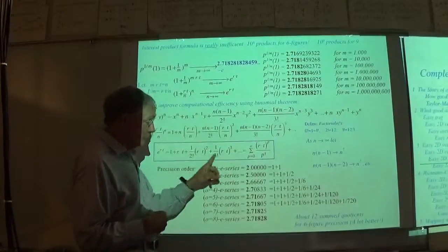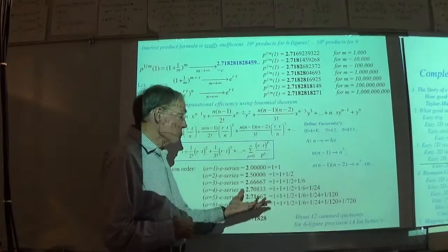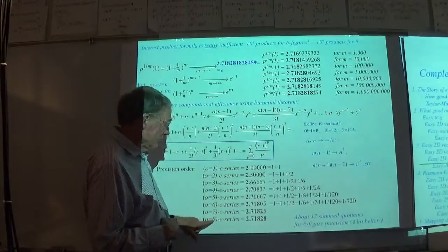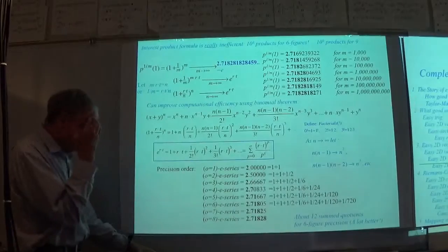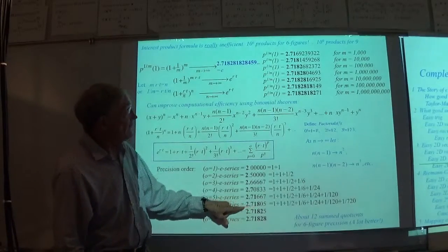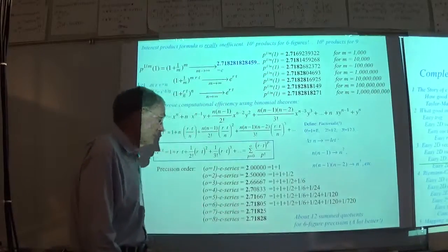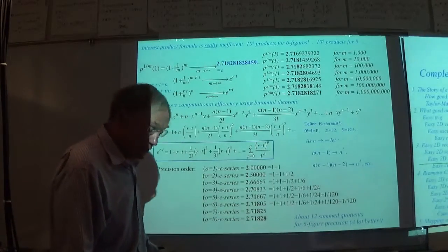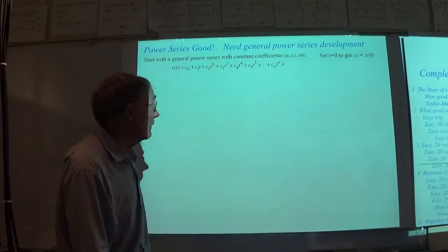Using the series, I really only need a small number of arithmetic steps. With a series of eight terms I'm already getting three-figure accuracy. To get three-figure accuracy the other way, I had to do 10,000 products — with the series I don't need anywhere near that many arithmetic steps. Six-figure precision comes a lot sooner with the series than with compounding.